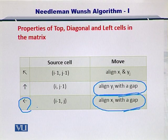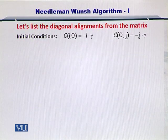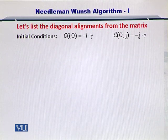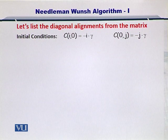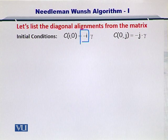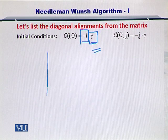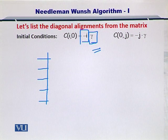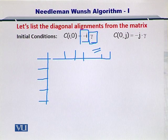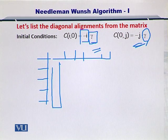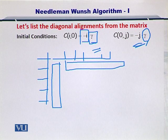The initial conditions that we use to set the matrix up are like this. CI0 is equal to minus I, that is the position multiplied by the gap penalty. So here, let's assume the gap is gamma. I would be your position on the vertical side or the left side of the matrix. Similarly, for the J, you need to consider the J position and multiply it by the gap penalty. In this way, you populate the first column and the first row.